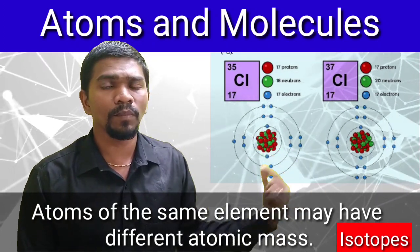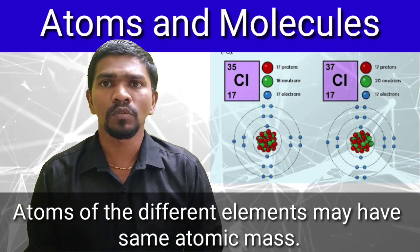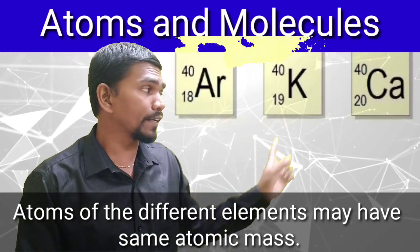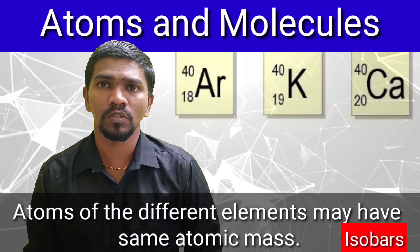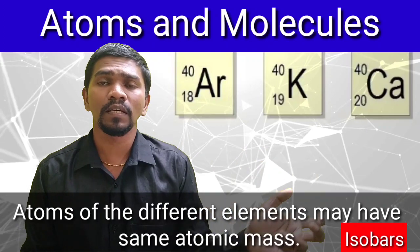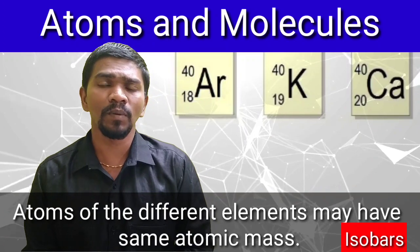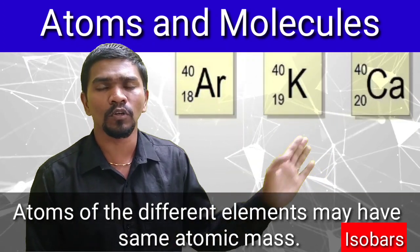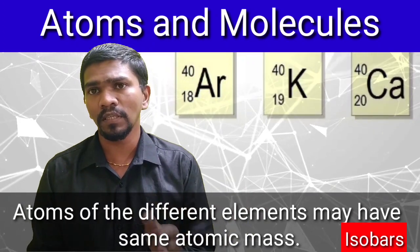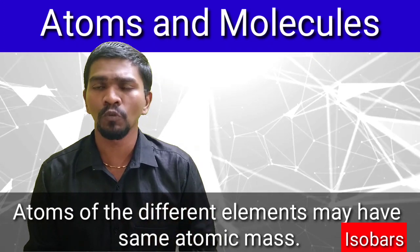Very few elements have different types of isotopes, which naturally occur, so the atomic mass is different while the atomic number is the same. The next point is isobars: different atoms having the same atomic mass but different atomic numbers. Isotopes and isobars may be answered in two-mark questions.